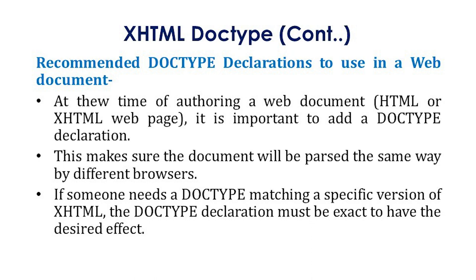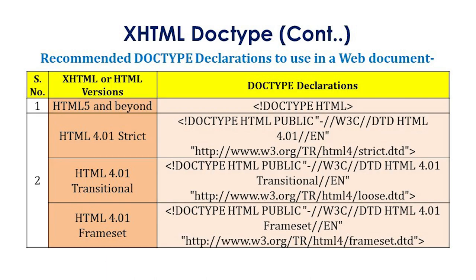When authoring a web document — whether HTML, XHTML, or XHTML web pages — it is important to add a doc type declaration. This makes sure the document will be parsed the same way by different browsers. If someone needs a doc type matching a specific version of XHTML, the doc type declaration must be exact to have the desired effect. The recommended doc type declarations are mentioned in the table below, where the left column describes the version and the right column shows the corresponding declaration.